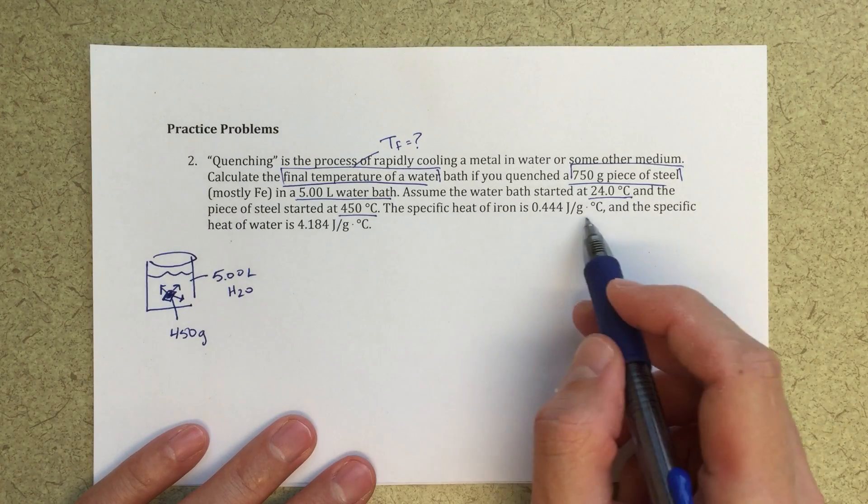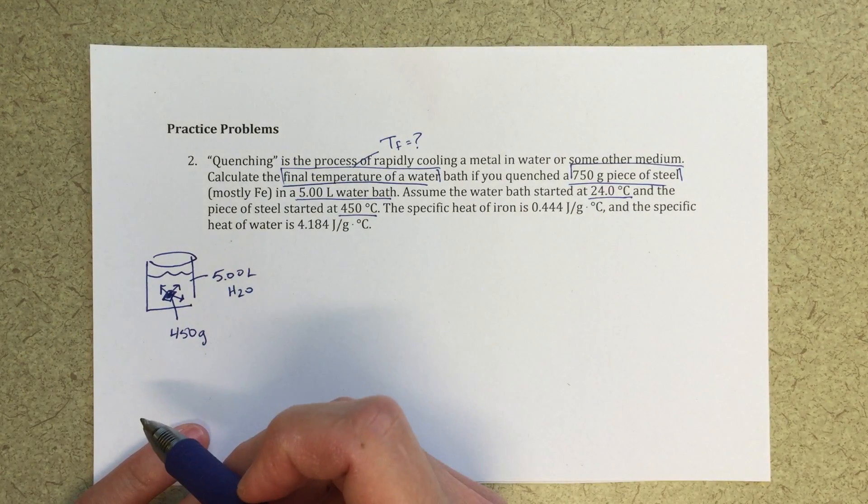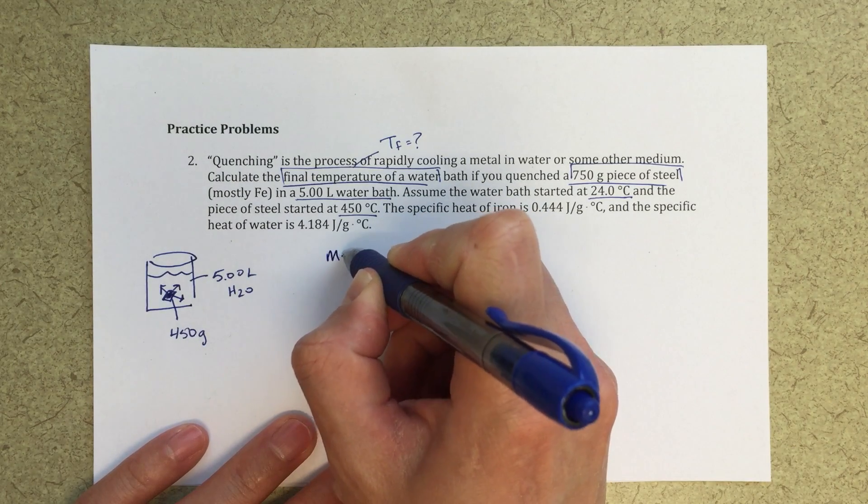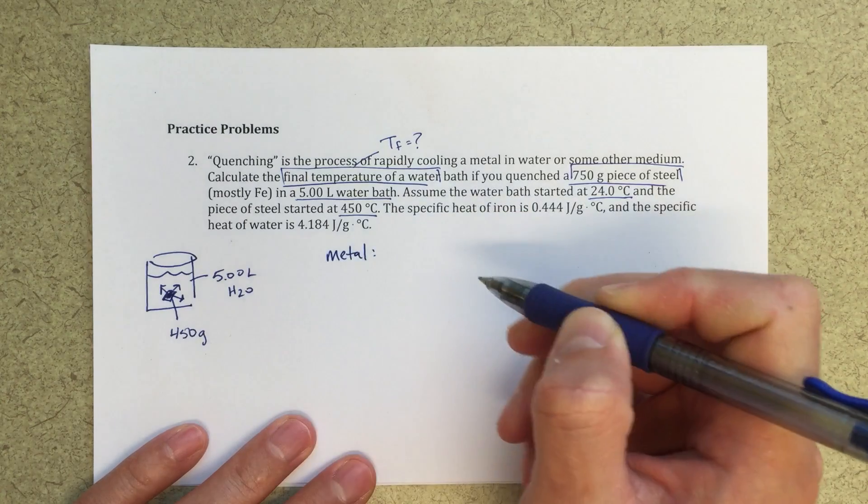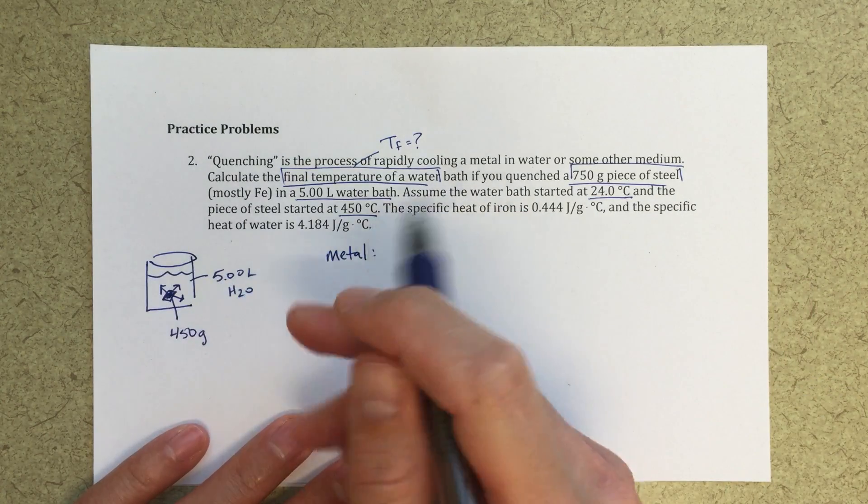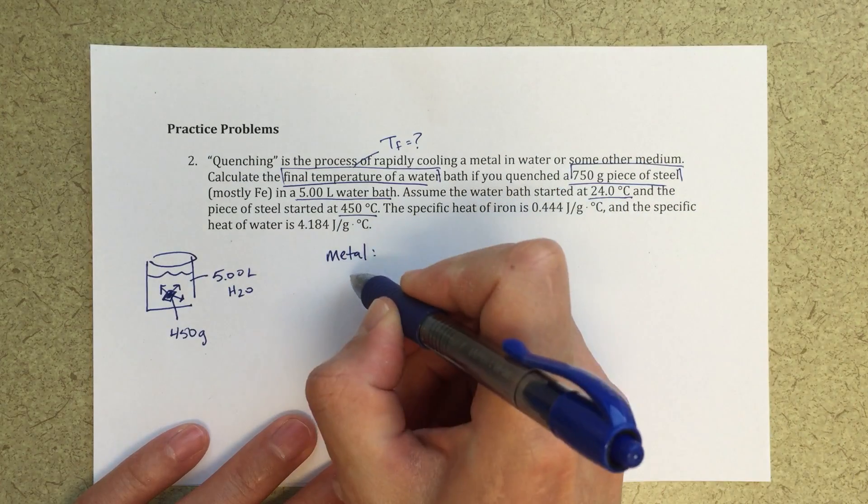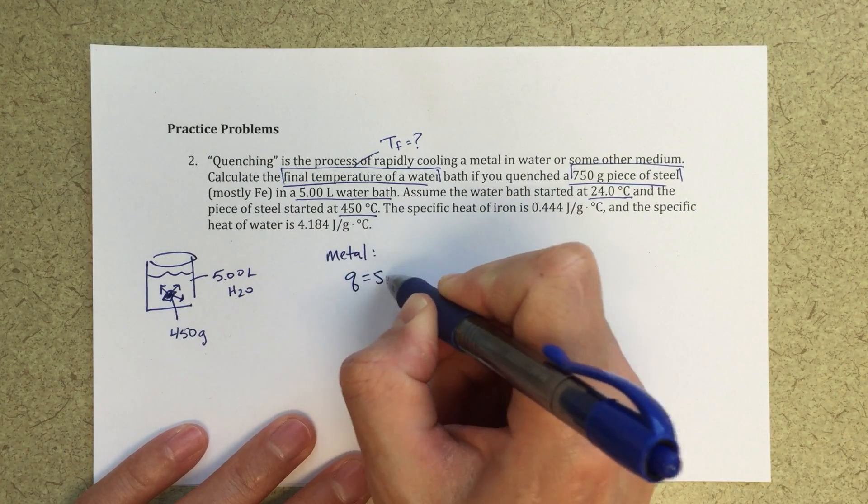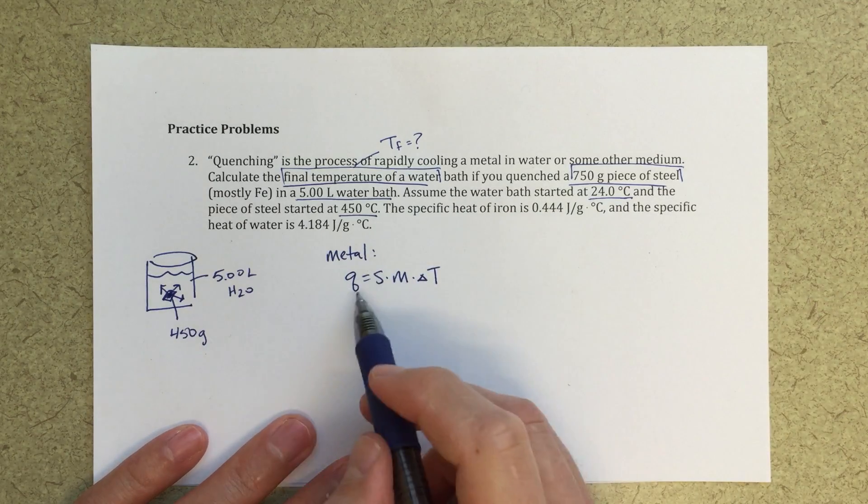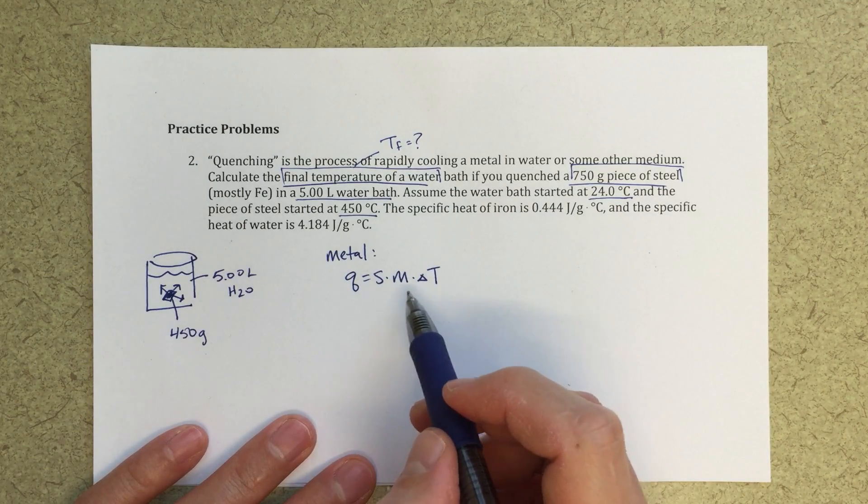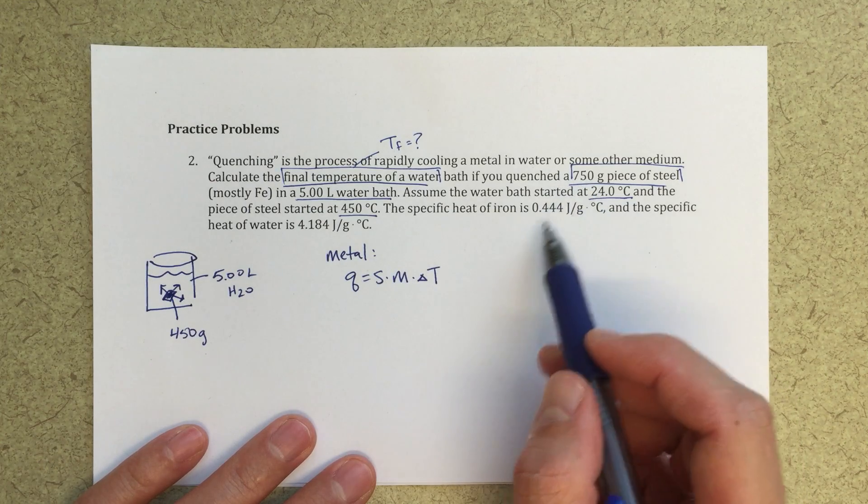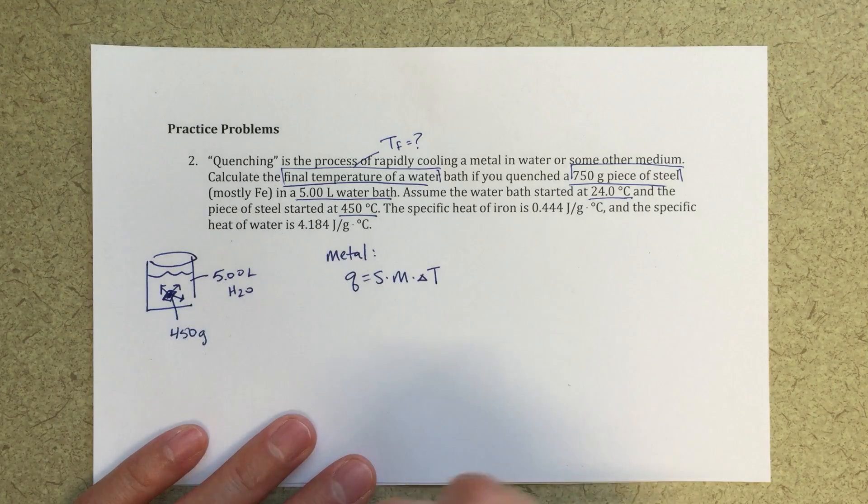We've got a specific heat of iron and we've got a specific heat of water. So from the point of view of the metal, the metal is going to lose energy, it's going to lose energy to the water solution. And that amount of energy we can model with q equals s times m times delta t. So I'm choosing to use q equals sm delta t because I've got a certain mass of steel, and I've got a specific heat for that piece of iron.